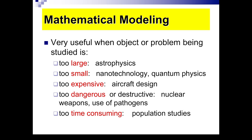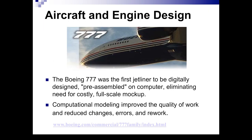When the Boeing 777 was first launched, it was important because it was the first jetliner to be digitally designed. So it was really pre-assembled on a computer, eliminating the need for costly, full-scale production. Computational modeling improves the quality of work and reduces errors and changes and reduces expenses.